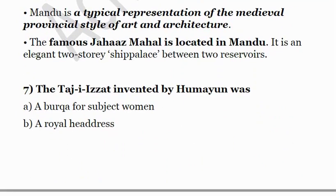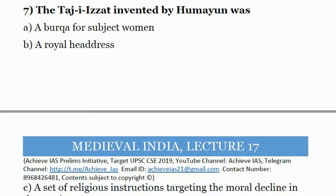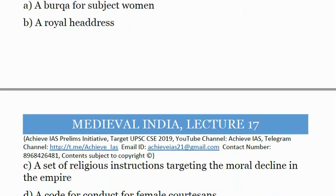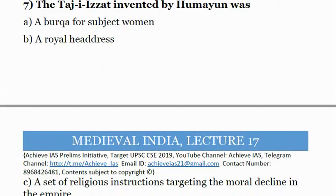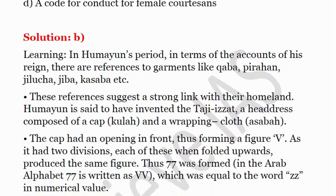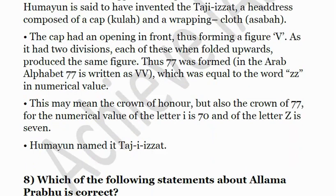Seventh question: 'Taze', invented by Humayun, was — A) a burqa for women subjects, B) a royal headdress, C) a set of religious instructions targeting moral decline in the empire, D) a code of conduct for female courtesans. The answer is B — a royal headdress. In Humayun's period, accounts of his dreams contain references to different garments. The Taze was a headdress composed of a cap, Kula, and a cloth wrapping called Sabha.